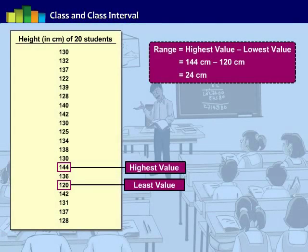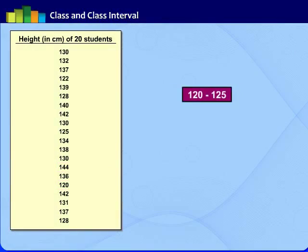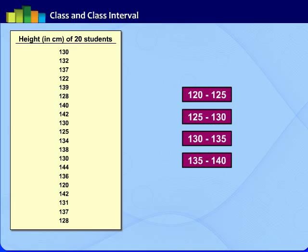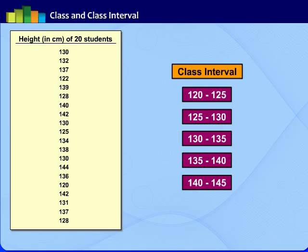As we know that range of this data is 24, let's group this data in 5 classes: 120 to 125, 125 to 130, 130 to 135, 135 to 140, 140 to 145. Here each class is known as class interval. The class interval must always be of equal size.